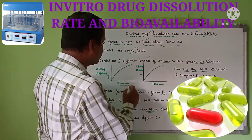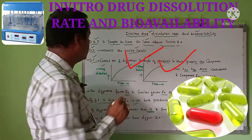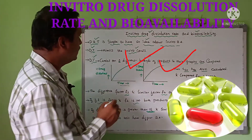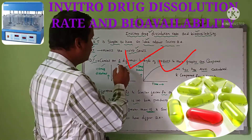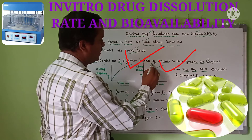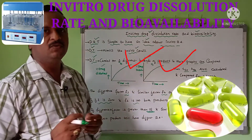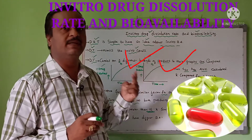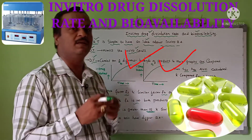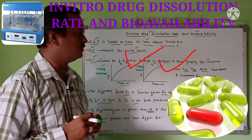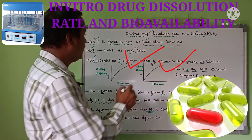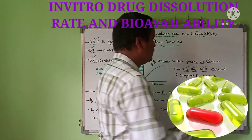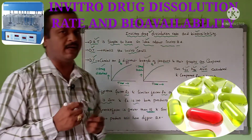Time is on the x-axis and percentage of drug dissolved is on the y-axis, comparing Brand A and Brand B. We collect two brands needed for comparison of dissolution testing. After that, we calculate T50, T90, and AUC, and compare the two brands.